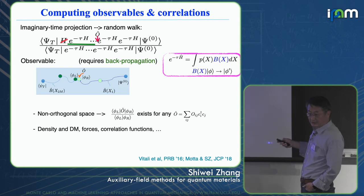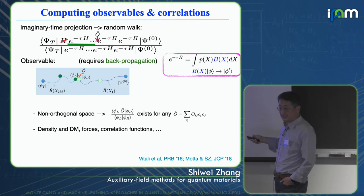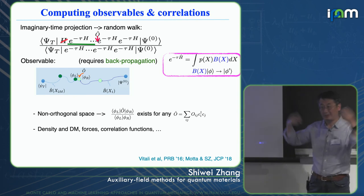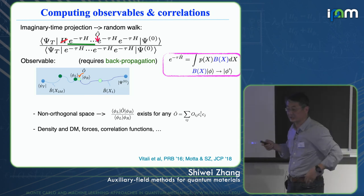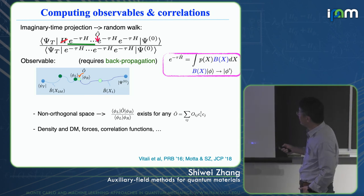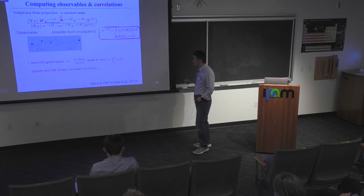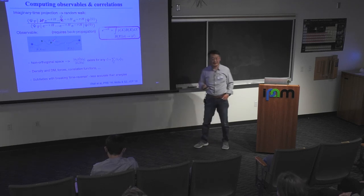This is important because if you are in an orthogonal space, the matrix element only exists if R and R' are connected by something — in FCIQMC, by a single or double excitation, which is tricky to handle. In AFQMC it is straightforward to compute correlation functions and observables. However, the accuracy of observables computed via back propagation is somewhat less than that of the energy because of this procedure.